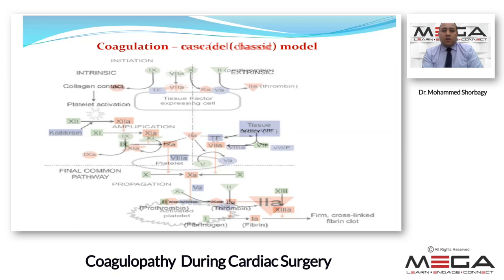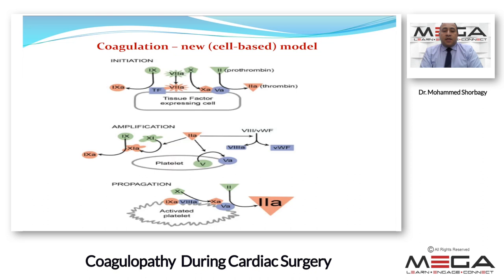The new cell-based model involves initiation, amplification, propagation, and cessation to form what's called a thrombin burst that converts fibrinogen to fibrin.